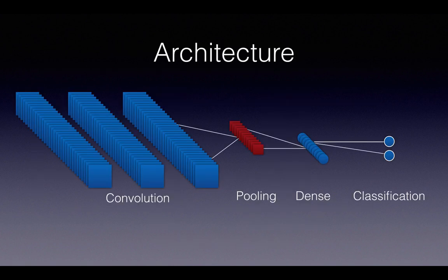After the images are normalized, they go through the entire neural network architecture, which is actually pretty simple to begin with. You have three convolution layers, a single pooling layer, the data gets flattened, it goes through a single dense layer, and finally a binary classification layer indicating if you have retinopathy or not.